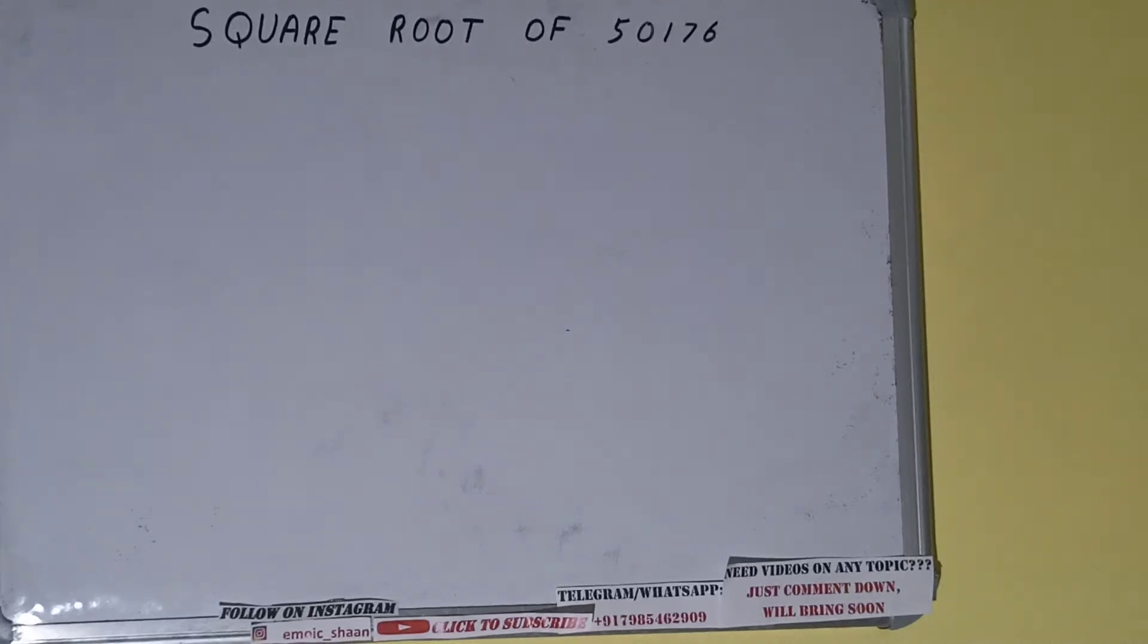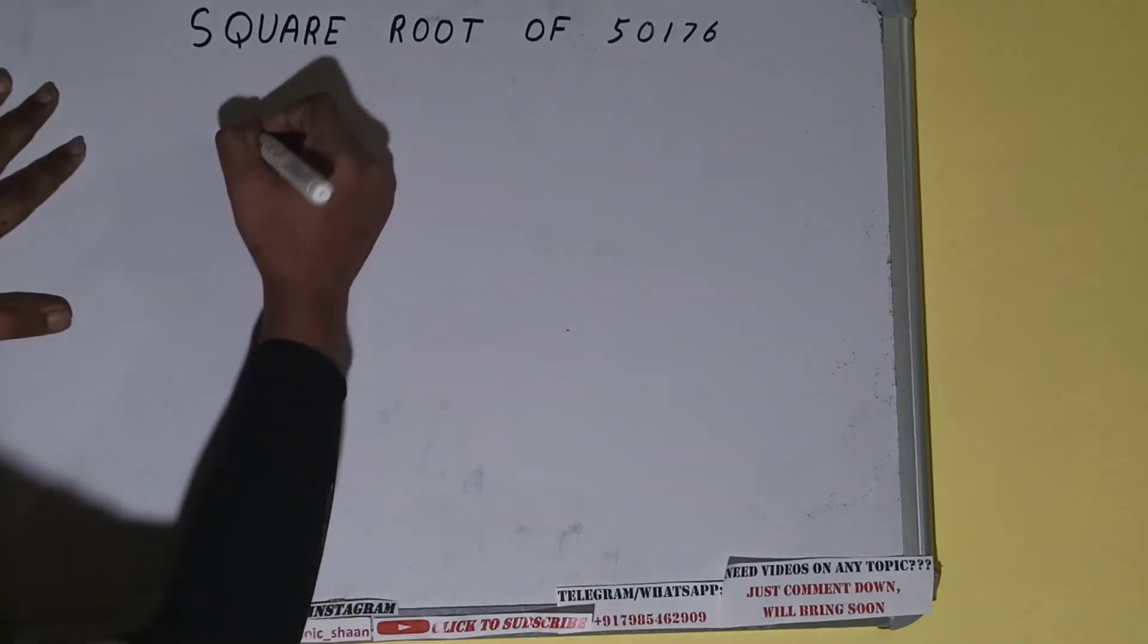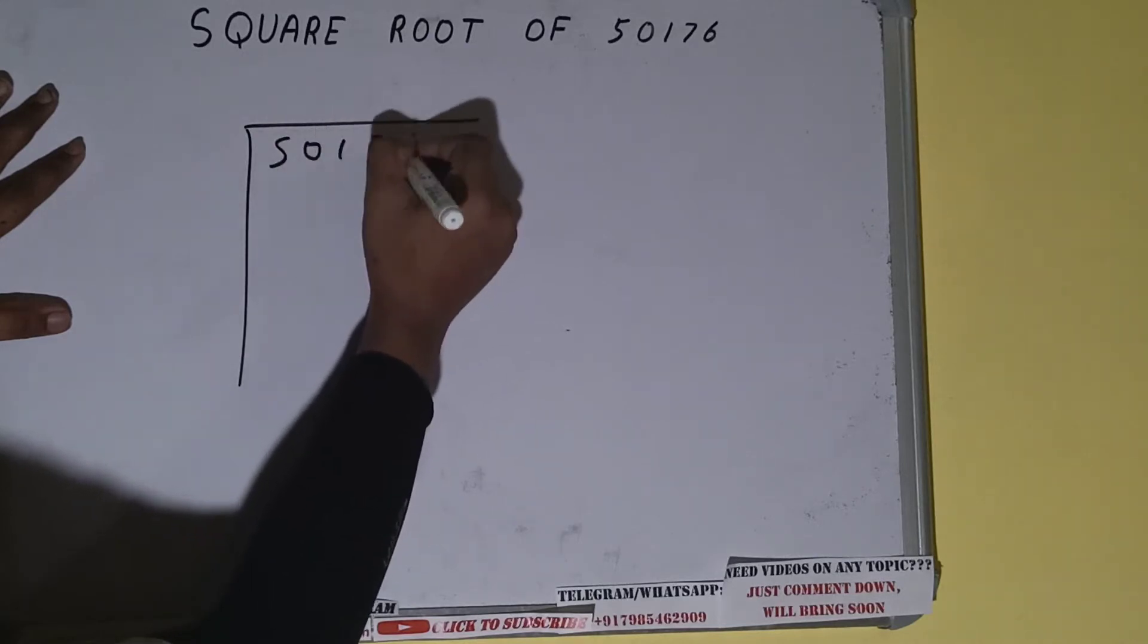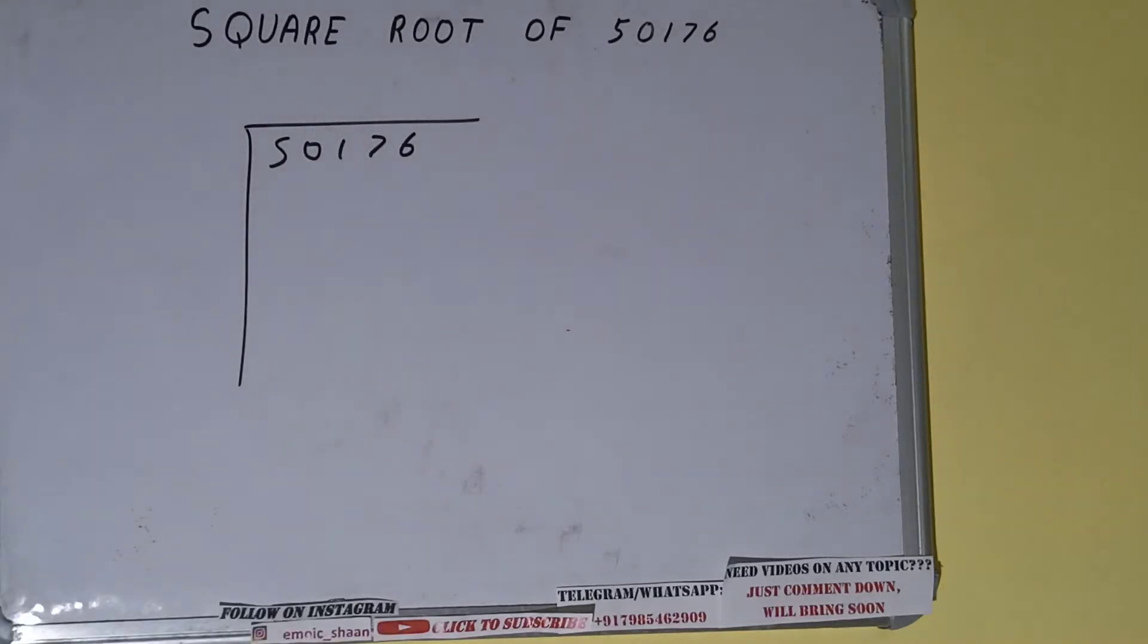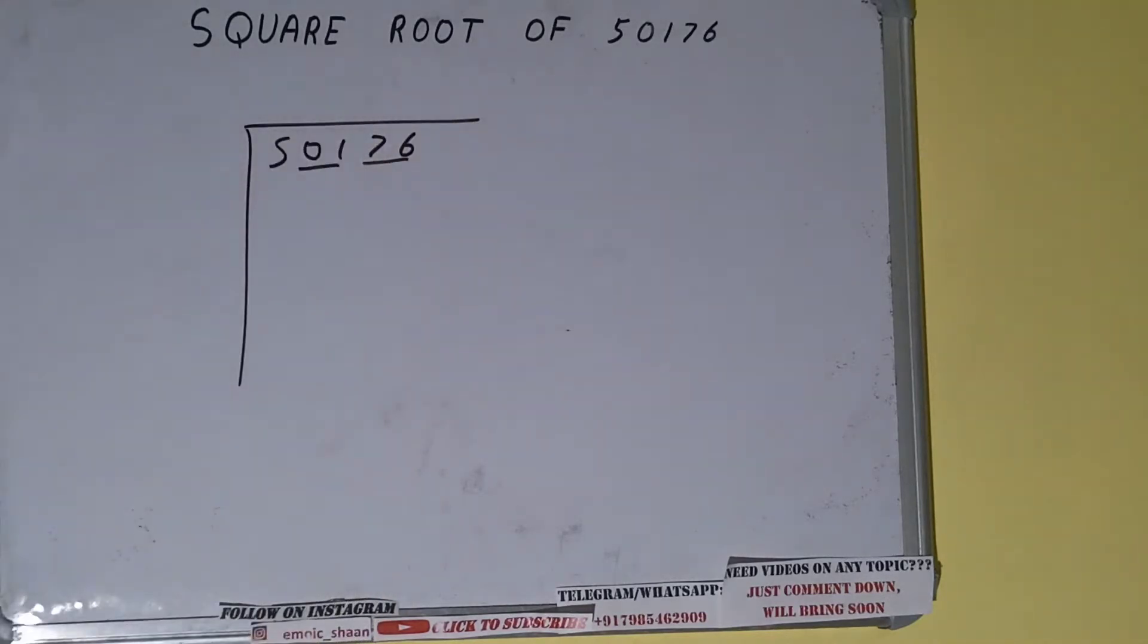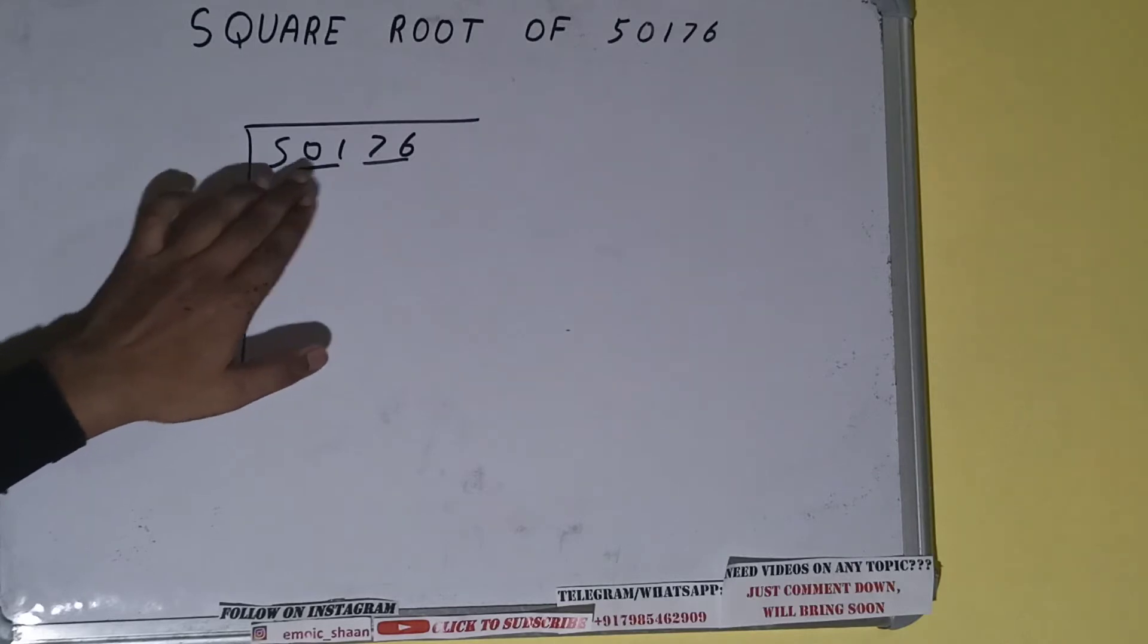Hello friends, in this video I'll be helping you with the square root of the number 50176. Let's start. First of all, we need to write the number like this: 50176. The next thing we need to do is form pairs from the right-hand side, so one pair will be this, one pair will be this, and this 5 will be left out. So first we'll divide this 5 and then we'll bring down the pairs.